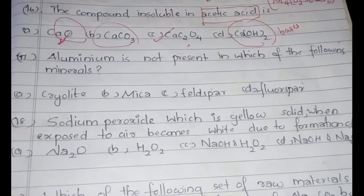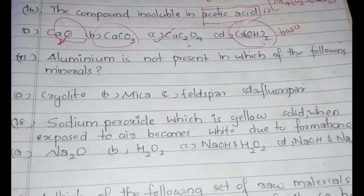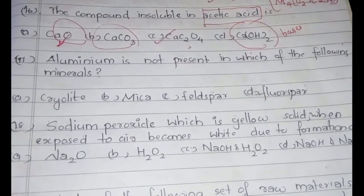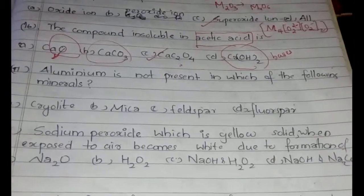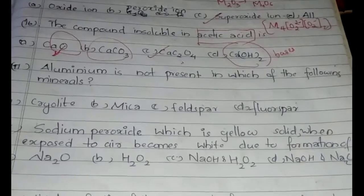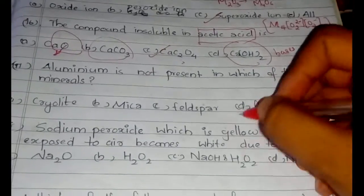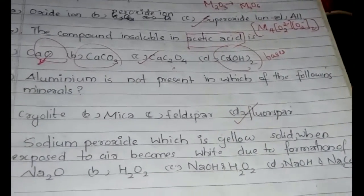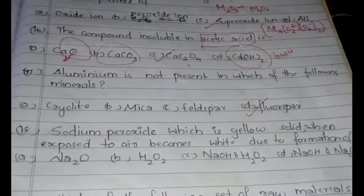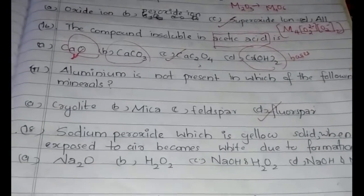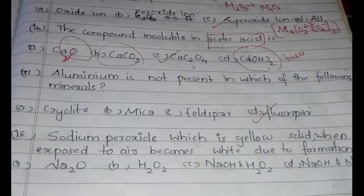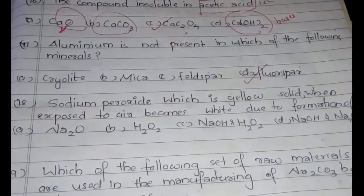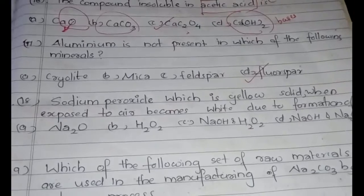Aluminium is not present in which of the following ores? The answer is fluorspar. All the other ores listed contain aluminium, except fluorspar.